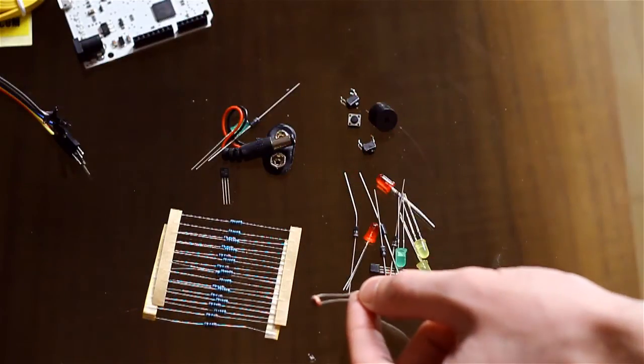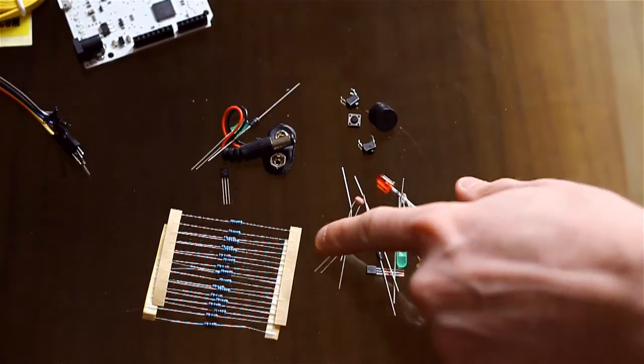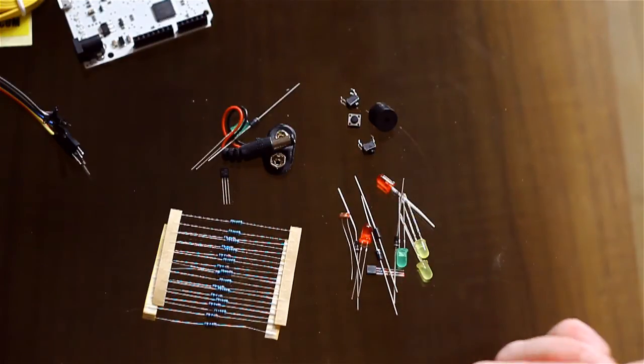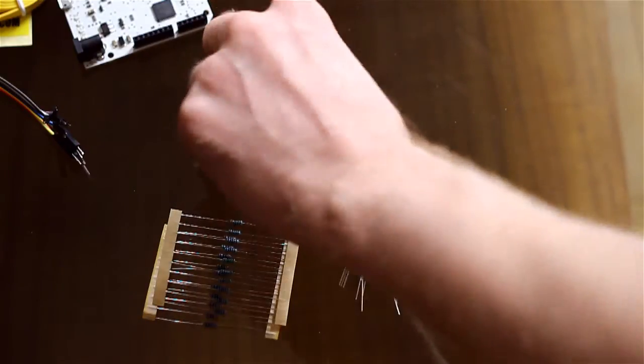I can't remember what they're called. LDR, I'm sure it is. A light dependent resistor. There's another transistor there. Another diode. A lot of diodes. Do you know what? I never use diodes.